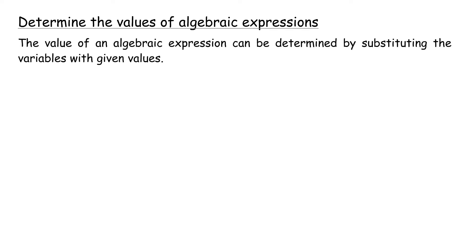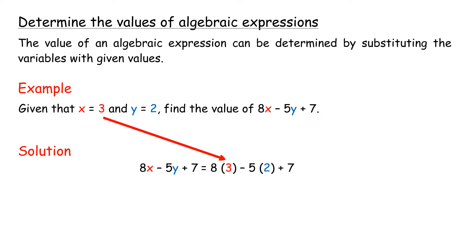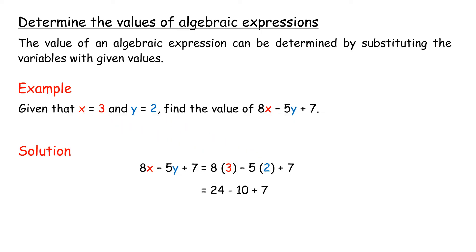Determine the values of algebraic expressions. The value of an algebraic expression can be determined by substituting the variables with given values. Example: Given that X equals 3 and Y equals 2, find the value of 8X minus 5Y plus 7. 8X minus 5Y plus 7 equals 8 times 3 minus 5 times 2 plus 7, equals 24 minus 10 plus 7, equals 21.